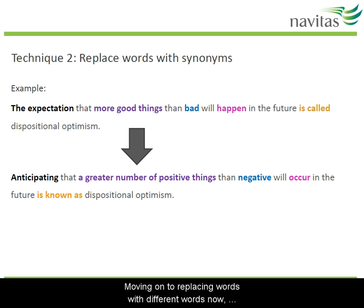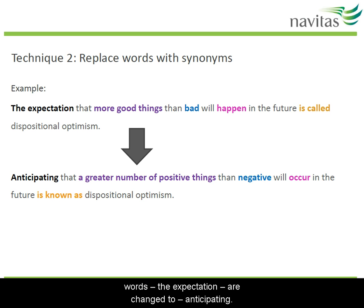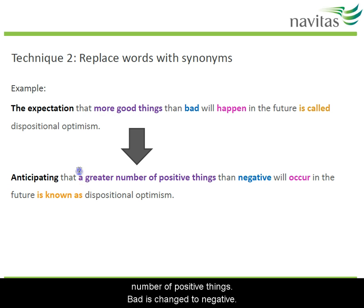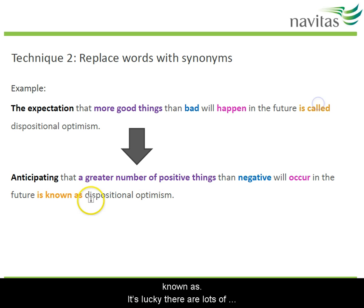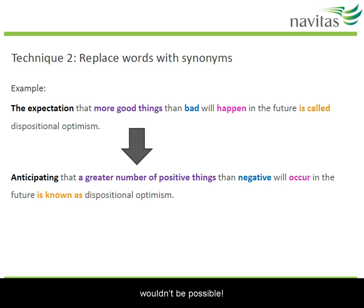Moving on to replacing words with synonyms: 'the expectation' is changed to 'anticipating'; 'more good things' becomes 'a greater number of positive things'; 'bad' becomes 'negative'; 'happen' becomes 'occur'; and 'is called' becomes 'is known as.' It's lucky there are lots of synonyms in English, otherwise all this replacing wouldn't be possible.